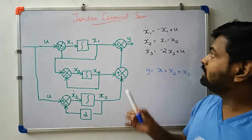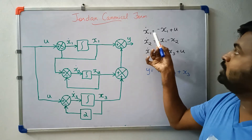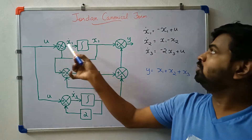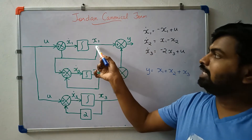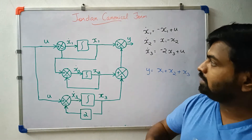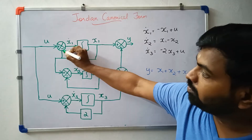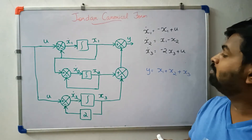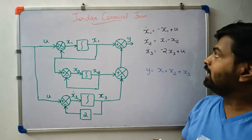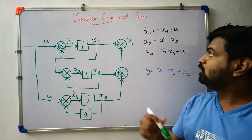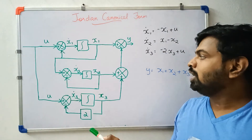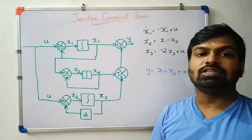For the block diagram, the first equation is x1_dot = -x1 + u, where u is the input and -x1 represents negative feedback. The second equation is x2_dot = -x2 + x1, with x1 feeding into x2 and -x2 as negative feedback.